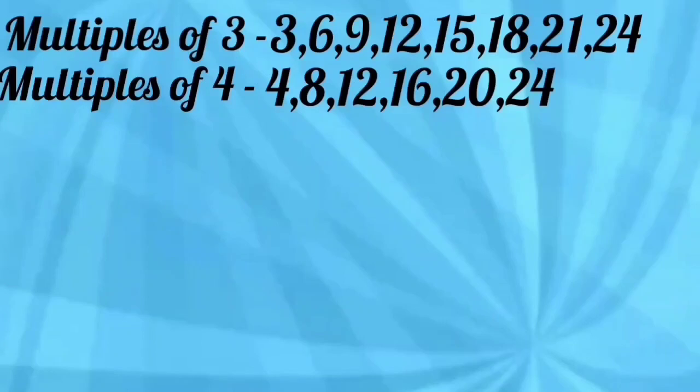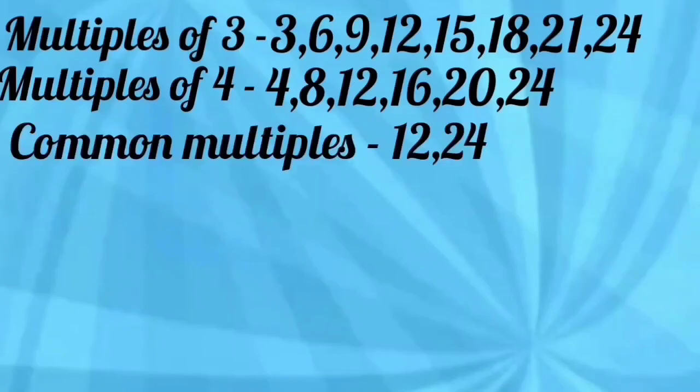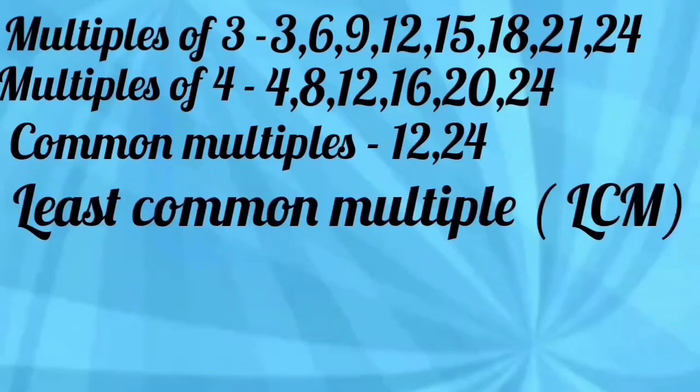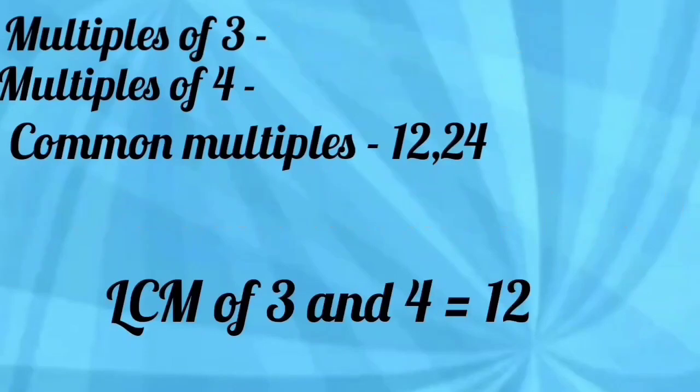Students, which are the common multiples where both met together? Yes, 12 and 24. 12 and 24 are common multiples of 3 and 4. Out of these multiples, which is smaller one? 12. The smallest common multiple is known as LCM. So LCM of 3 and 4 is 12.